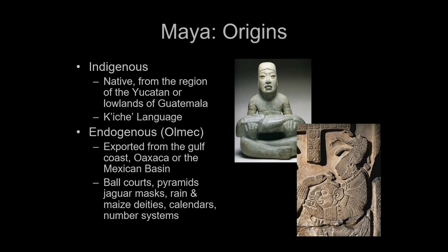The other option is that they're not native — they come from some other place. The Olmecs are collapsing around 300 CE, and strangely, that's about the time that the Maya gets started. It's entirely possible that some population exported their civilization to this territory and then flourished. It could also be a mix: a group of elites fleeing the collapse of the Olmec civilization could have moved into the Mayan zone, bringing things like ball courts, pyramids, jaguar masks, rain and maize deities, calendars, and number systems.